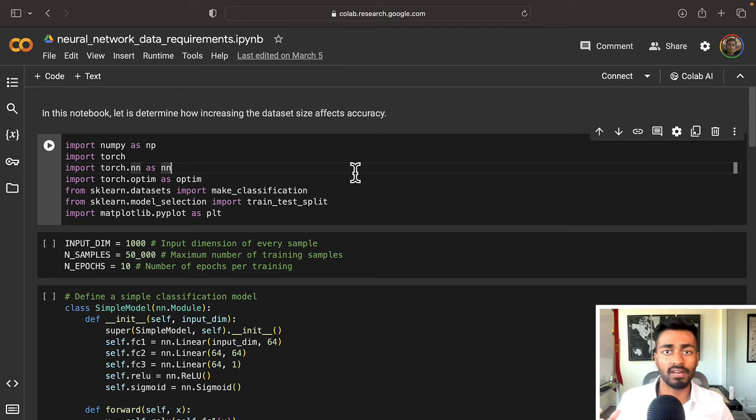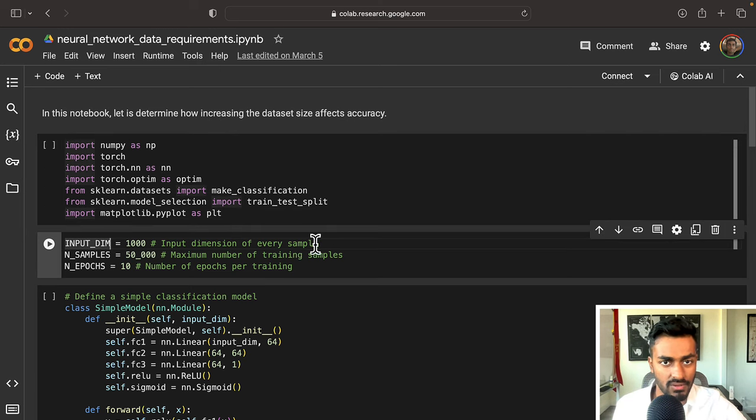In this past three, we're actually going to look at a collaboratory notebook where we're going to see how the dataset size can affect model accuracy. So we first by importing some libraries. NumPy for tensor and array manipulation. Torch for creating the neural network, the optimizer. And then scikit-learn we're going to use make classification for generating our synthetic dataset. Train test split to split the data into a training dataset and a test dataset. And then we're going to plot some pretty charts with matplotlib.